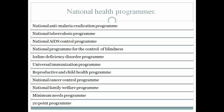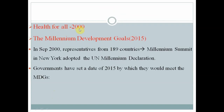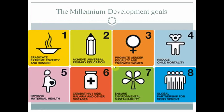National health programs under the five-year plans include anti-malaria, tuberculosis, AIDS, blindness, iodine deficiency, immunization, reproductive and child health, cancer control, minimum needs, and the 20-point program. Health goals included 'Health for All by 2000,' followed by the Millennium Development Goals set for 2015, which included eradicating poverty and achieving universal primary education.